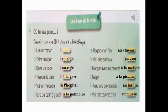Maintenant, les lieux de la ville où tu vas pour certaines activités. On a besoin d'aller à des lieux différents pour pratiquer ces activités. Par exemple : lire une BD — « Je vais à la bibliothèque. » C'est l'activité A.